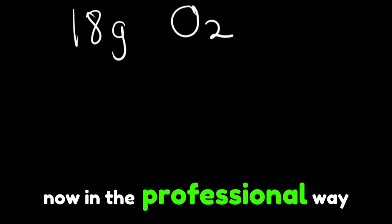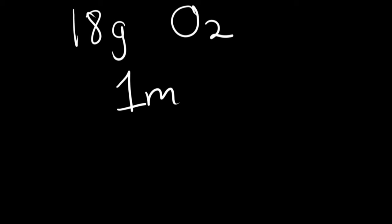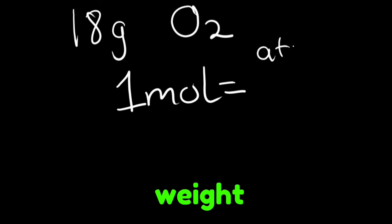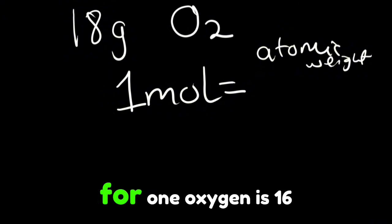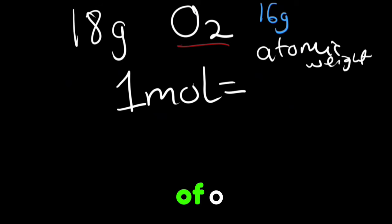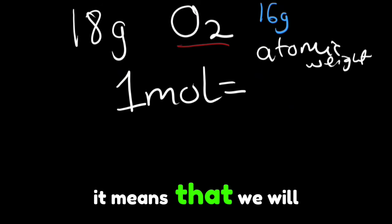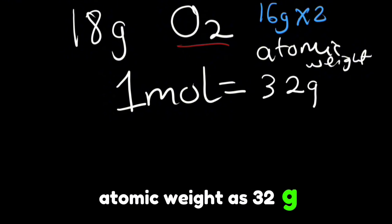Now in the professional way we will use an expression. The expression is that one mole is equal to the atomic weight. Now the atomic weight for oxygen, for one oxygen, is 16 grams as given in the periodic table. Now here we have two of O, so it means that we will multiply by two and we will get the atomic weight as 32 grams.